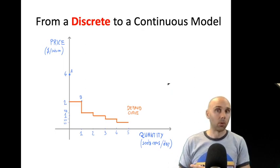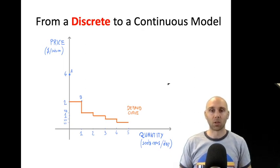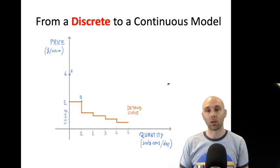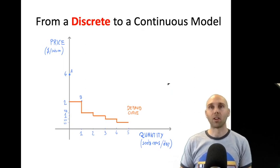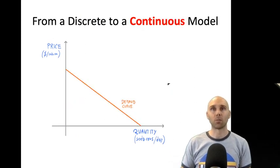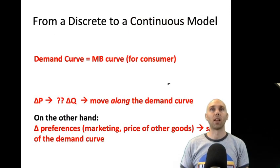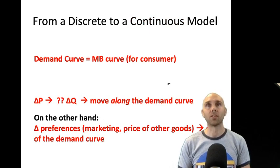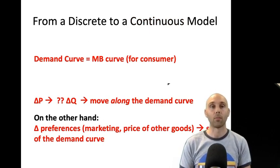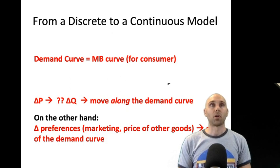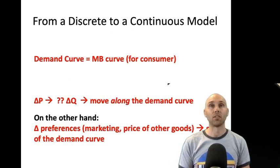Once we put people into one big market with many consumers, or think about products that are more easily divisible — talking about grams of a certain product or millions of cans of Coke — this step function smooths out and we get a continuous downward sloping demand curve. We'll typically focus on straight lines for this course. This line represents the marginal benefit curve for each consumer — their maximum willingness to pay for each different unit. Any change in price is represented by a change in quantity — a movement along the demand curve.